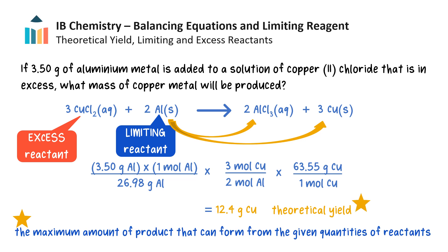The amount of limiting reactant is used to determine the theoretical yield of each product. For copper, this value is 12.4 grams. The theoretical yield in a chemical reaction refers to the maximum amount of product that can be produced from a given amount of reactants, assuming that the reaction proceeds to completion with perfect efficiency, and that all reactants are converted into products according to the balanced equation. The theoretical yield is a calculated value, not the mass of product actually weighed out in the lab. The mass of product or yield weighed out after the reaction usually differs from the calculated maximum theoretical yield slightly, due to factors such as impurities, side reactions and incomplete reactions.